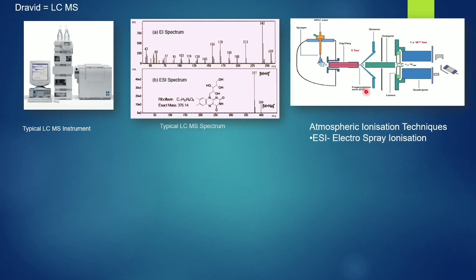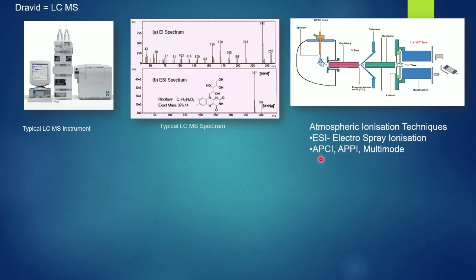We have multiple techniques available. One is called ESI — electrospray ionization. The reason it is called electrospray ionization is that you put a nebulizer gas which sprays the liquid coming from the HPLC column in the form of a spray, and then you apply an electric charge. Then we have atmospheric pressure chemical ionization — APCI. In APCI, if your molecules are more non-polar in nature and cannot take the charge directly from your capillary tube...